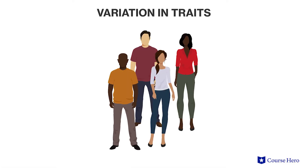Next time you're in the classroom, look around you and you'll see that although all your peers are humans — the same species as you — no two individuals in the class will look exactly the same, unless you have identical twins in the room. This variation in traits is true not only for human populations, but for any species.